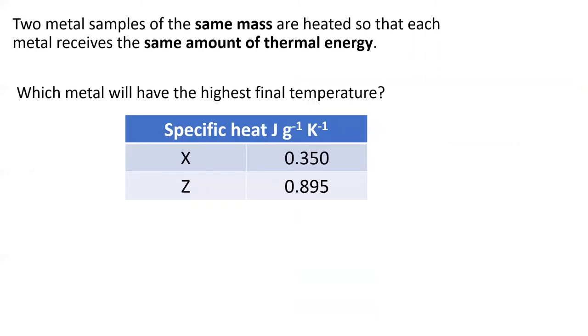Let's do a quick practice problem to see how well you understand the concept of specific heat. If we have two substances, x and z, with the same mass, and they are heated with the same amount of thermal energy, which substance will have a higher final temperature?